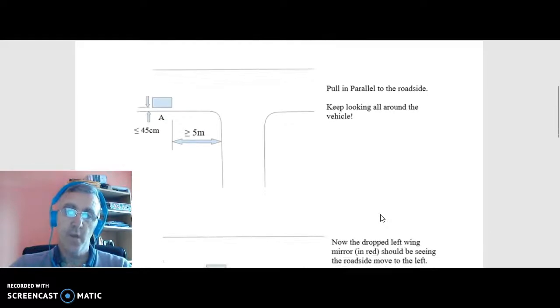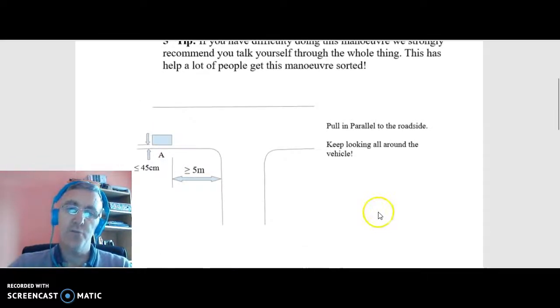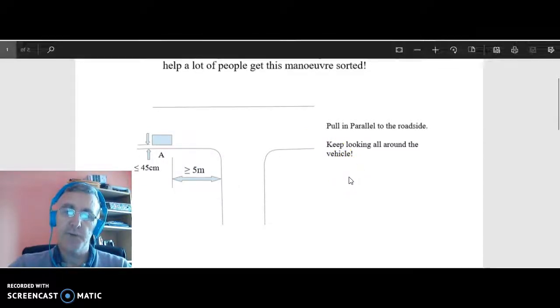Now on the reverse around the corner, you have to pull in as shown in the diagram here, within 45 centimeters of the roadside and at least five meters away from the point of the corner, and keep looking all around before you start to maneuver and while you're actually doing the maneuver.